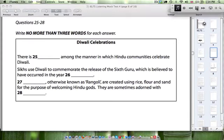You have some time to look at questions 25 to 28. Okay, so let's quickly go through these. There is blank among the manner in which Hindu communities celebrate Diwali, probably an adjective or noun. Sikhs use Diwali to commemorate the release of the sixth guru. This will appear in the listing for sure. This is a name which is believed to have occurred in the year, a number, of course, otherwise known as Rangoli, are created. So some things can be a noun created using rice, flour, and sand. Purpose of welcoming Hindu gods. This will likely appear in the listing too. They are sometimes adorned with, which means to be decorated with something. So listen for that.